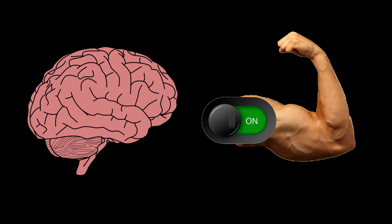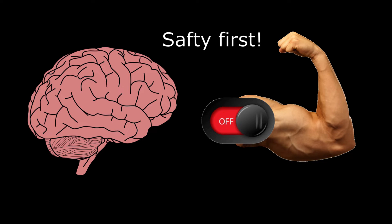So during REM sleep, your brain essentially turns off all of your skeletal muscles to prevent any action in your dream from being acted out physically. This is to prevent accidental injury.